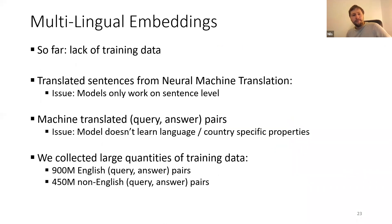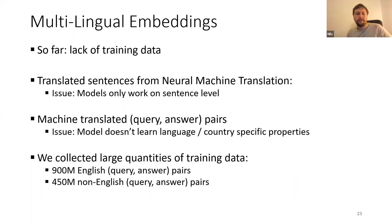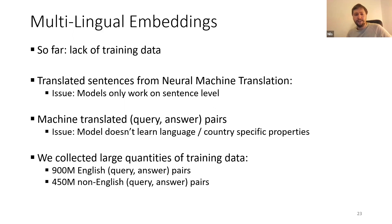With multilingual embeddings it's quite easy. You take the model, pass the text through a transformer network, and get an embedding — you don't need to do any language identification, stemming, stop words, or anything like that. Everything can use the same pipeline.